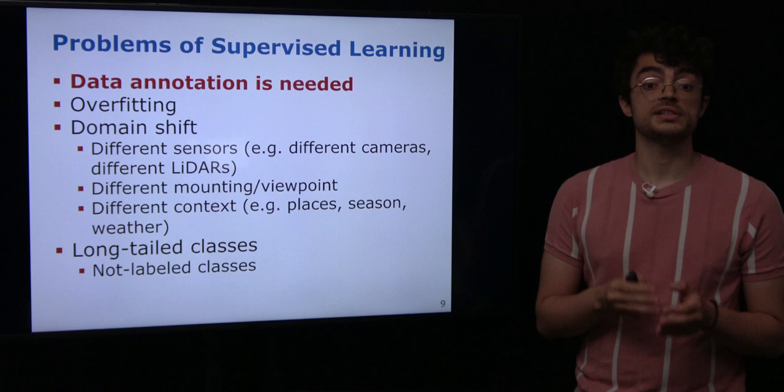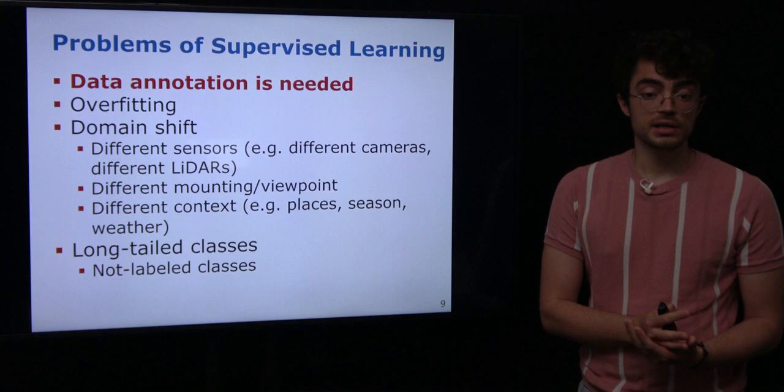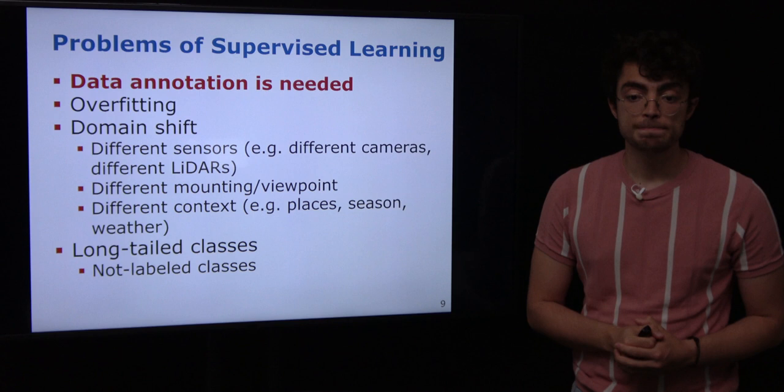This leads us to some drawbacks of supervised learning. Data annotation is needed to train our model, but if we have few annotated data this can lead to the problem of overfitting, where the model overfits to the training set and achieves low performance whenever it sees something that is not in the training set.